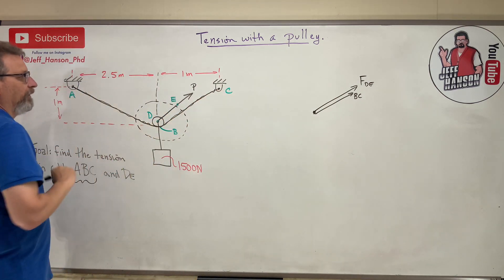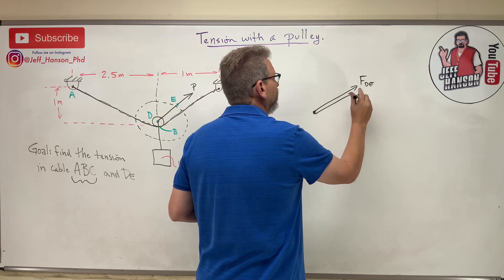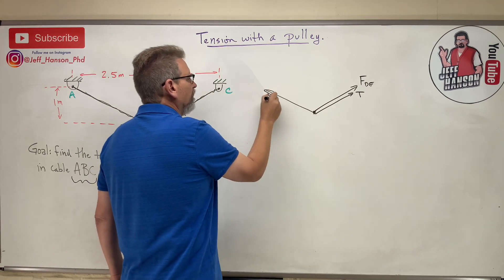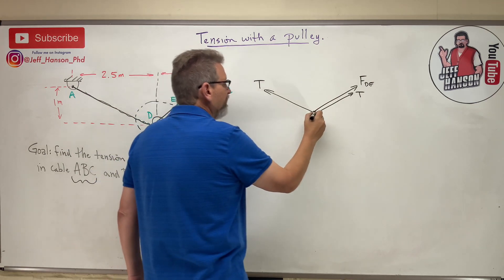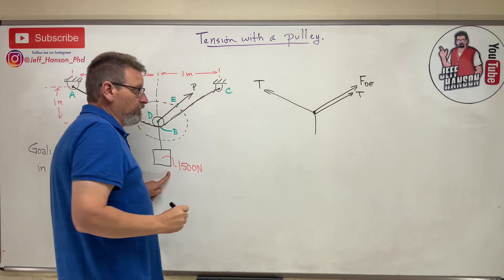But you know what? I'm just gonna call it T - I'm gonna call the tension in this rope here, in this one wiggly rope, I'm gonna call that T everywhere so it'll be the same. Then this way there's another T there, and then pulling down on this whole system is our 1500 Newton weight.